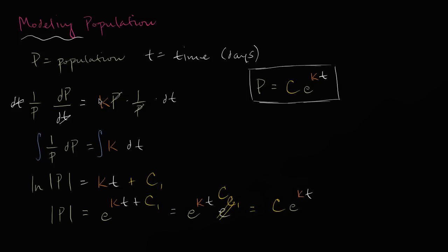In the last video, we established that if the rate of change of a population with respect to time is proportional to the population, we were able to solve that differential equation and find a general solution which involves an exponential. The population is going to be equal to some constant times e to some other constant times time.